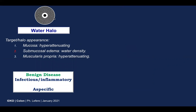The first zone presents with the typical water halo sign. This is the advantage of using water instead of positive contrast, because water allows you to see three different layers: the central mucosa, which is hyper-attenuating; then the submucosal edema, which has water density; and finally, the muscularis propria as a slightly hyper-attenuating thin layer. This corresponds to benign disease — infectious or inflammatory — and is specific for benign disease.